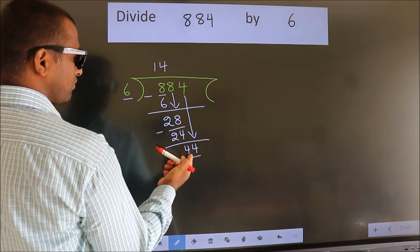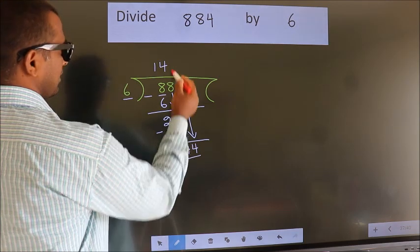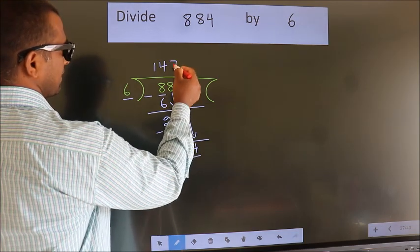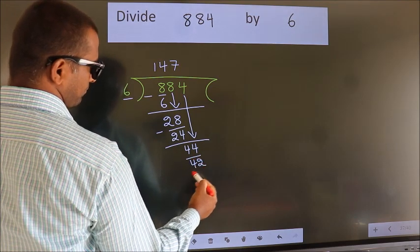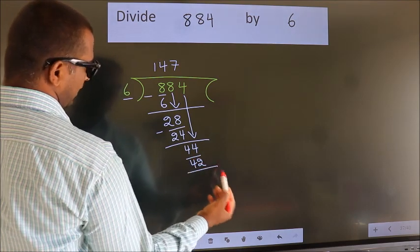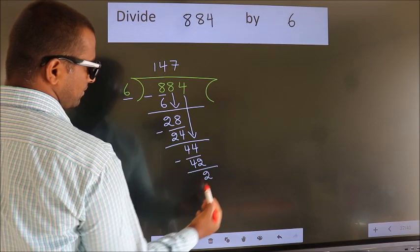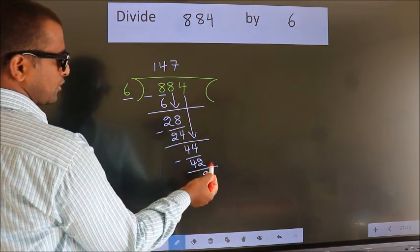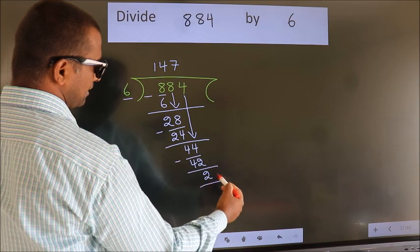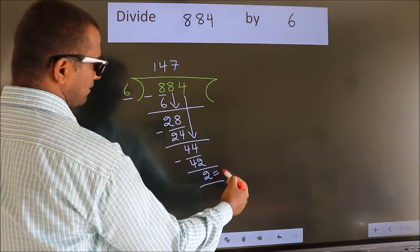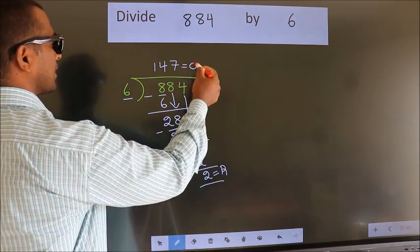A number close to 44 in the 6 times table is 6 sevens, which is 42. Now we subtract — we get 2. There are no more numbers to bring down, so we stop here. This 2 is our remainder, and this is our quotient.